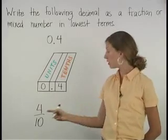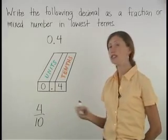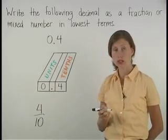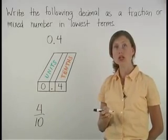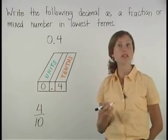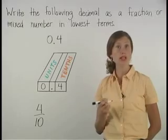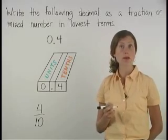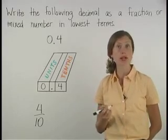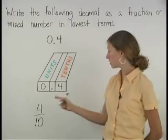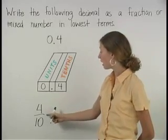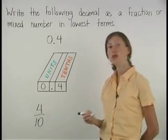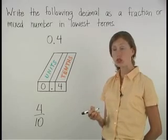Notice, however, that 4 tenths is not in lowest terms. So we need to divide the numerator and the denominator by the greatest common factor of 4 and 10, which is 2.